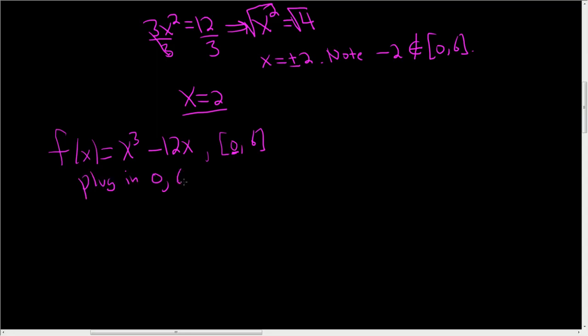So we're going to plug in 0, 6, and 2. The biggest y value we get is the maximum. The smallest y value we get is the minimum. So let's do it one at a time.